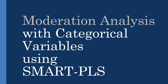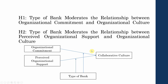In this session we are going to talk about moderation analysis with categorical variables using SmartPLS. Here is the model I am interested in testing: the type of bank, whether it's a public sector bank or a private sector bank, could moderate the relationship between organizational commitment and collaborative culture, and between perceived organizational support and collaborative culture. H1: type of bank moderates the relationship between organizational commitment and organizational culture. H2: type of bank moderates the relationship between perceived organizational support and organizational culture.